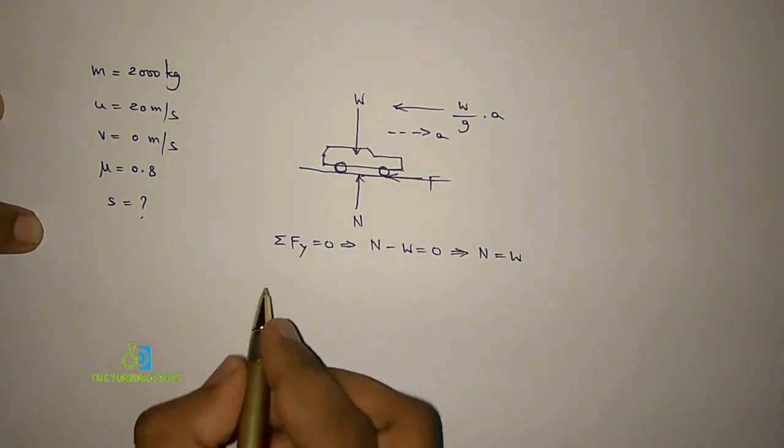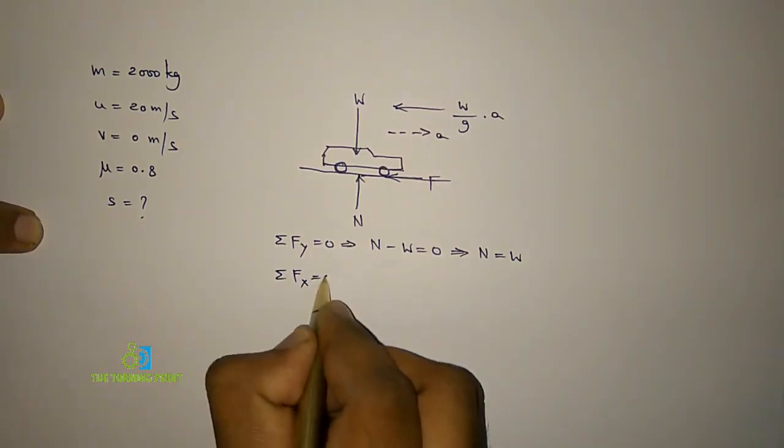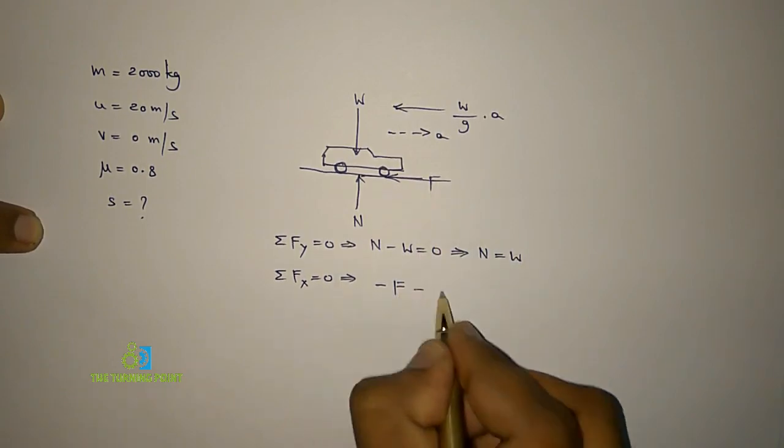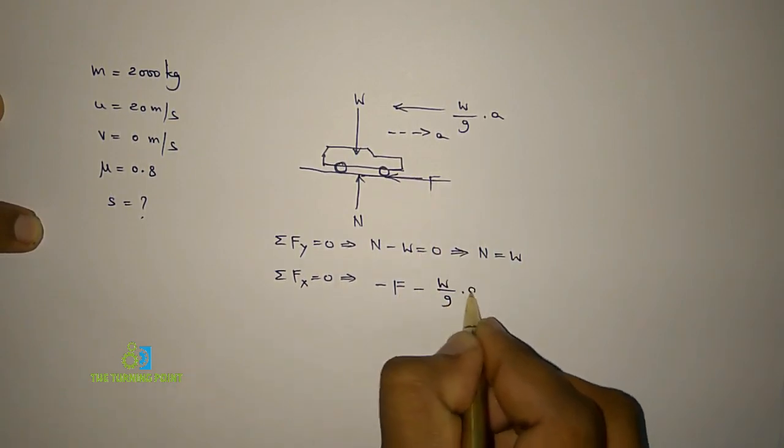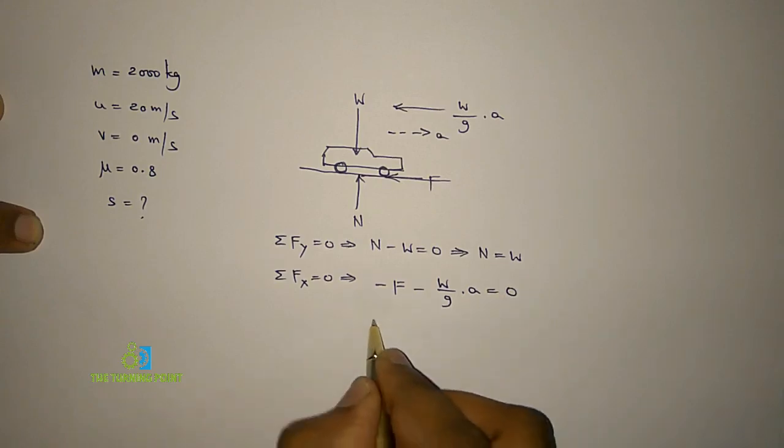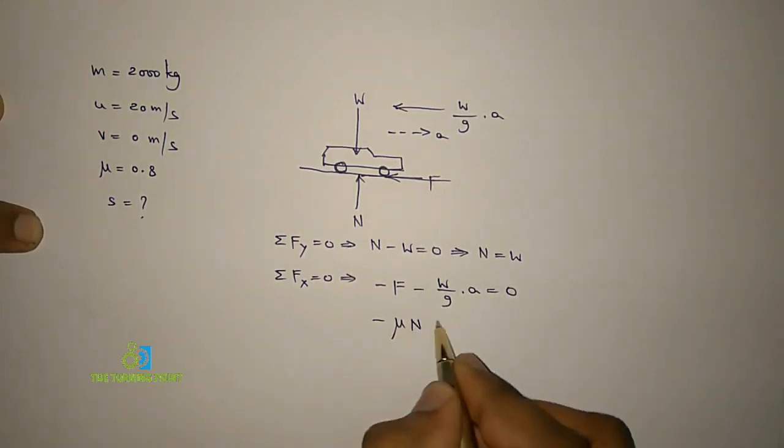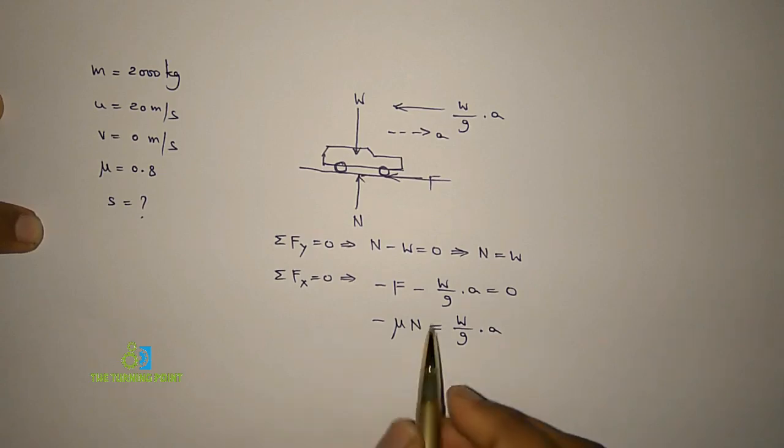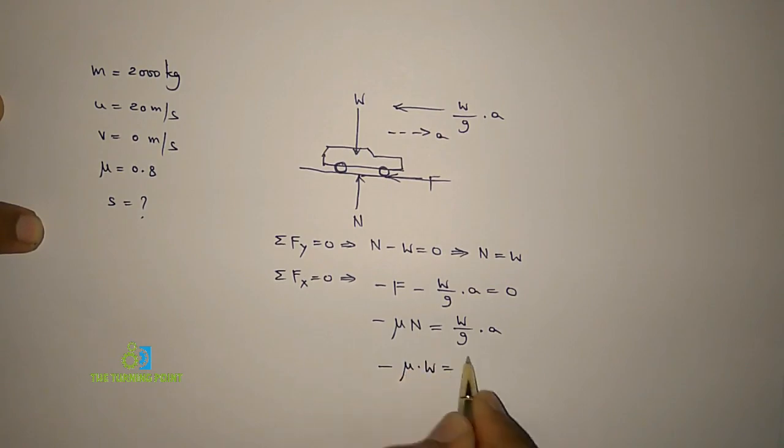So here, when I consider ΣFx = 0: -F along the x direction and -w/g times a equals 0. Instead of frictional force, I can write it as μN - w/g times a equals 0. If you take that one onto the right-hand side, it equals w/g times a. You can replace N by w, so then μw equals w/g times a. w cancels from that, so a equals -μg.